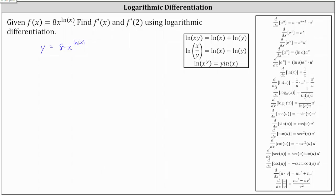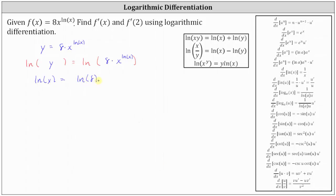To perform logarithmic differentiation, we take the natural log of both sides of the equation. We then expand the right side using log properties. Applying the product property of logarithms — natural log of x times y equals natural log x plus natural log y — the right side becomes natural log eight plus natural log of x to the power of natural log x.